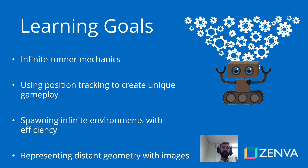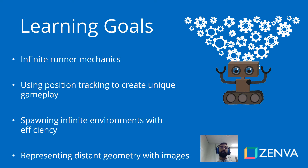We'll cover in a lot of detail the process of spawning all of these environmental elements — all those trees, the giant grass things, the platforms themselves. We're going to be creating a component that allows us to spawn elements based on the distance from the player, efficiently using object pools. It can be dropped into any Unity project and is very flexible, so it's something you might be able to use again in your own games.